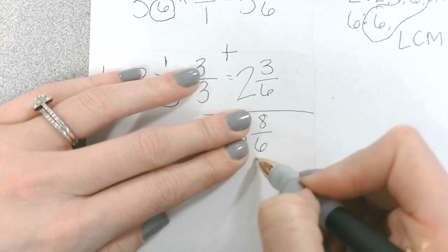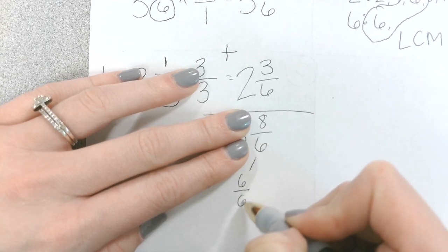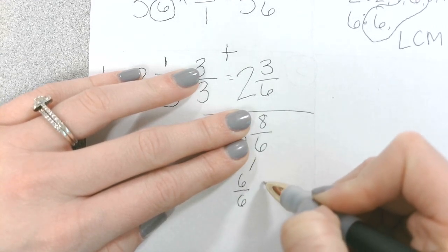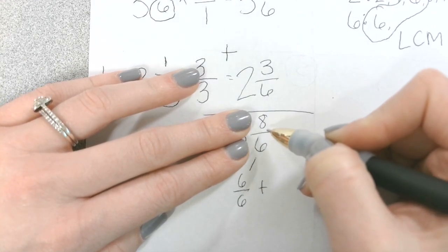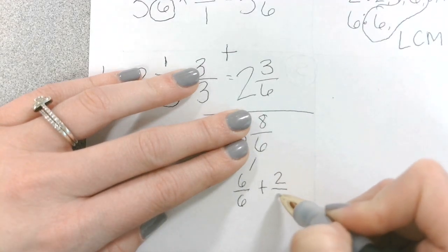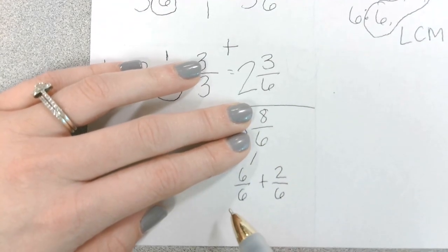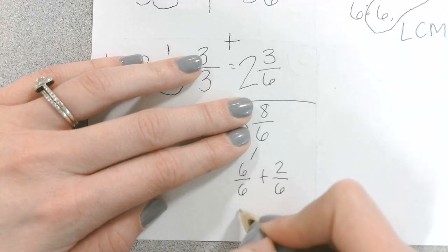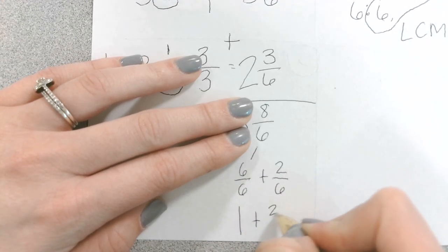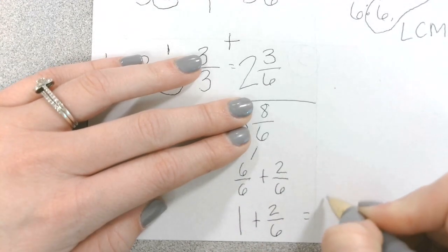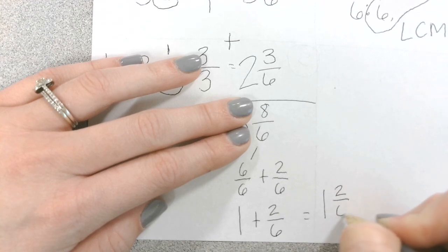Do you all agree with that? Yes. Okay. I can take out 6 over 6. So 6 6 plus how much equals 8 6? 2 6. 2 6. And we know that 6 6 is equivalent to what? 1. 1. So this would be like saying 1 plus 2 6, which equals 1 and 2 6.